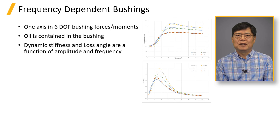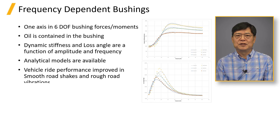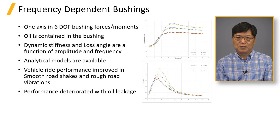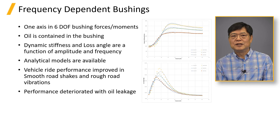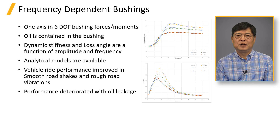We have a couple of analytical models to implement in ANSYS Motion. Hydro bushings significantly improve vehicle ride performance in smooth road shake and rough road vibration. However, the performance deteriorates once the bushing is damaged and develops oil leakage.